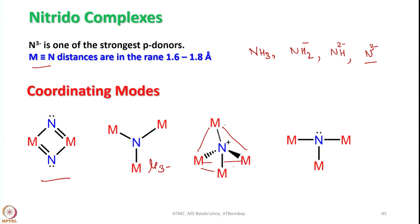So, we come across this kind of μ₄ bridging. And of course, it can also bridge three metal centers in this fashion keeping the lone pair intact, so it can coordinate to another one. If you see here, it is typically like ammonia — it can be nicely compared to ammonia. We have two-electron covalent bonds and still the lone pair is intact. This can act as a metalloligand. So, these are some of the very important coordination modes of the nitride ligand.